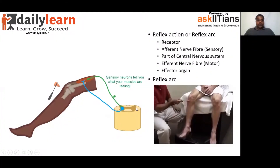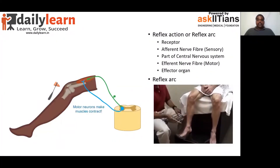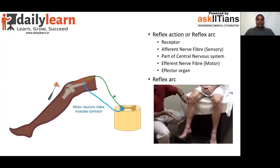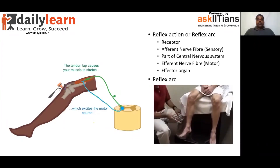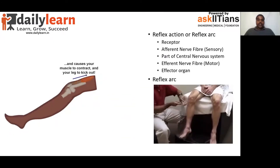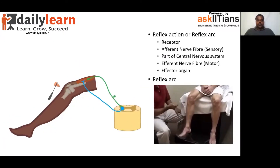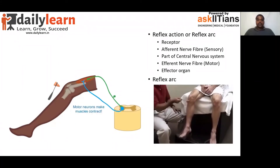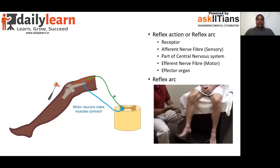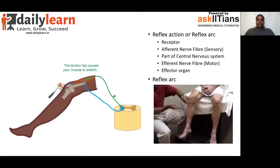We are going to see Reflex Action in detail now. Reflex Action actually means action without thought processing. When we have Reflex Action, it actually involves both the peripheral nervous system and a part of the central nervous system, which together work for Reflex Action.